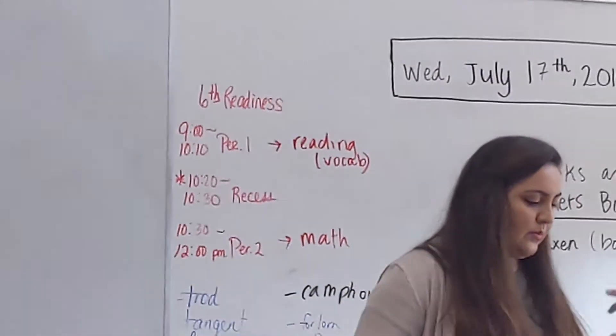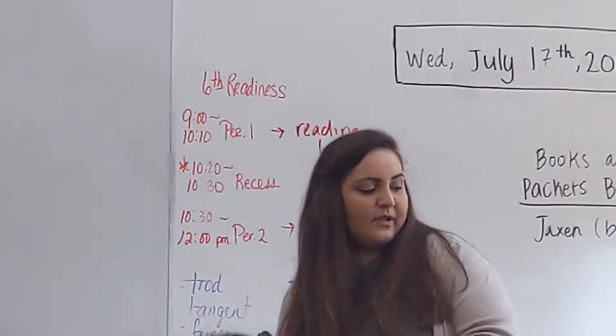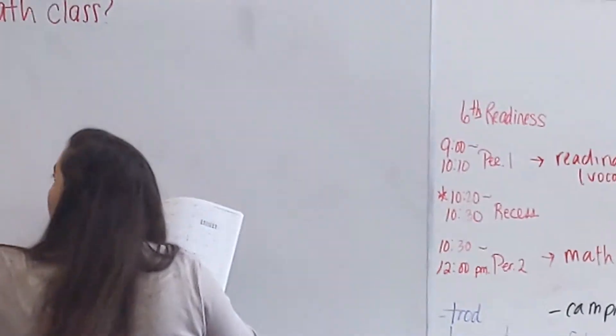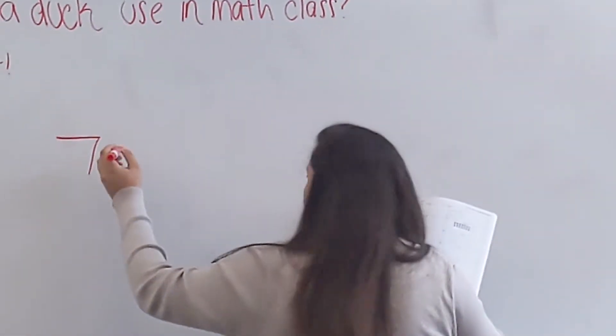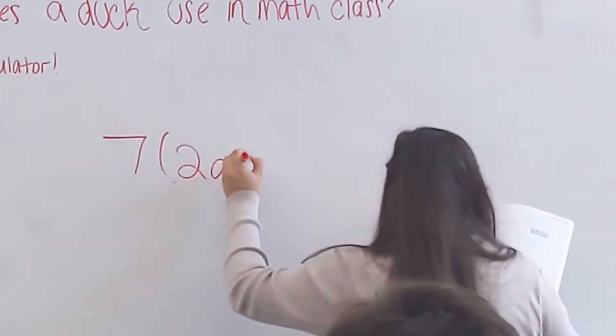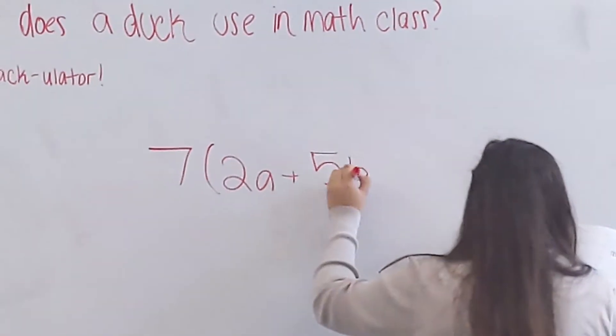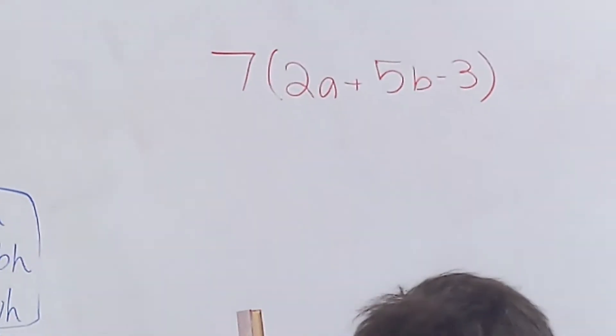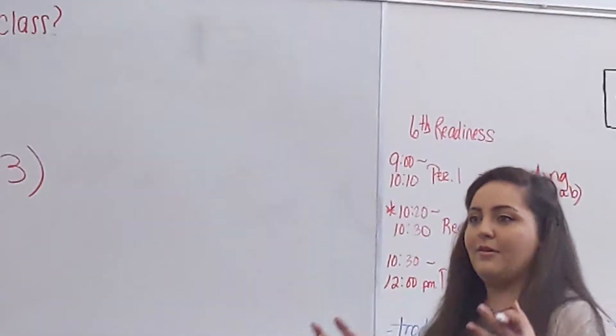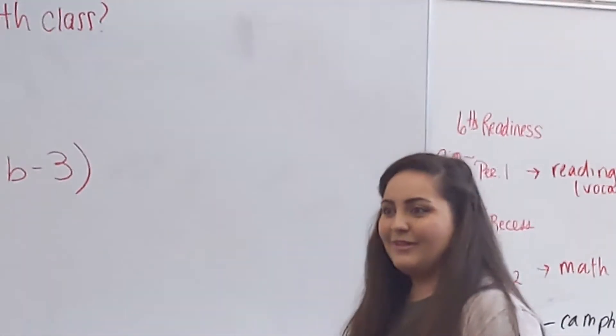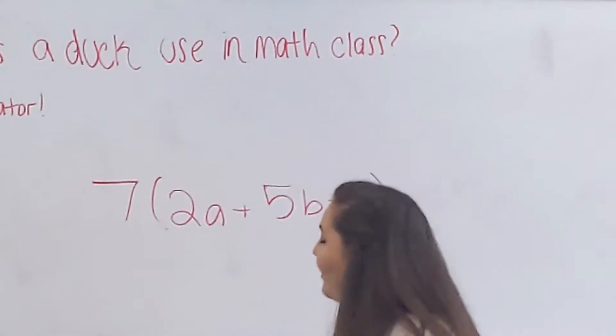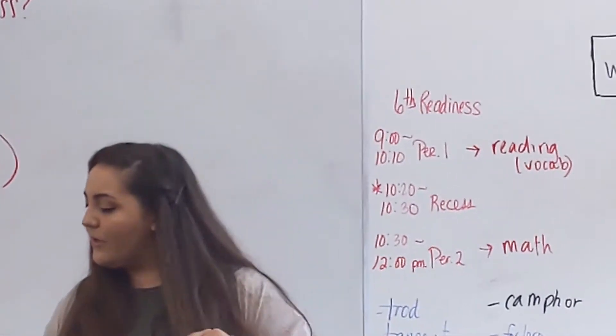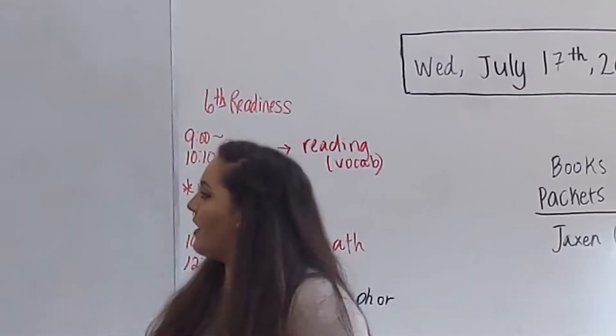We have number eleven. We need to simplify seven in parentheses, two a plus five b minus three. Do we have a volunteer that would like to solve this on the board? What's your name again? Reese? Ms. Reese, could you please solve this on the board? Everybody, don't forget to either write your work down on your notebooks or write on your whiteboards. Let's work this along with her.